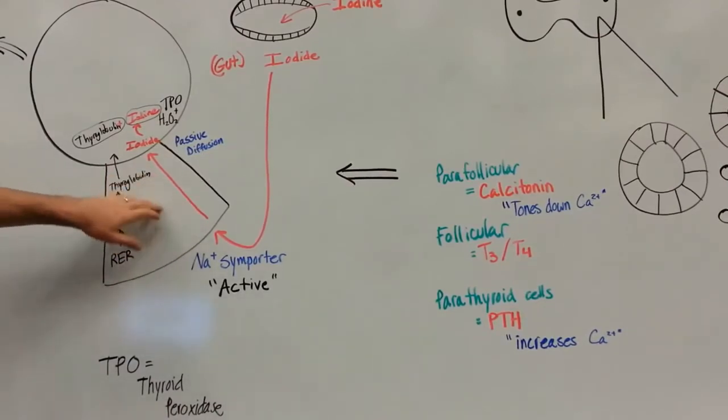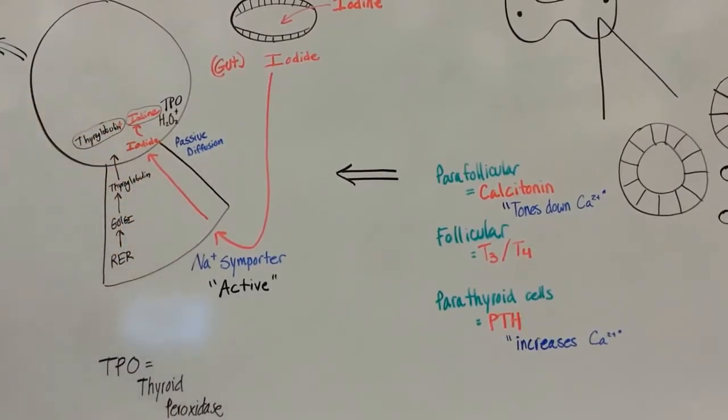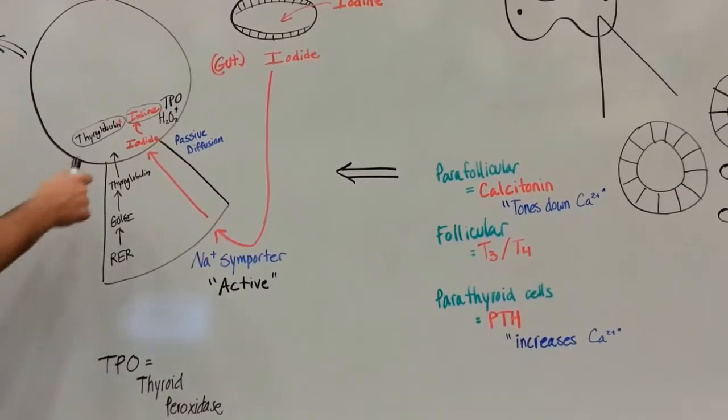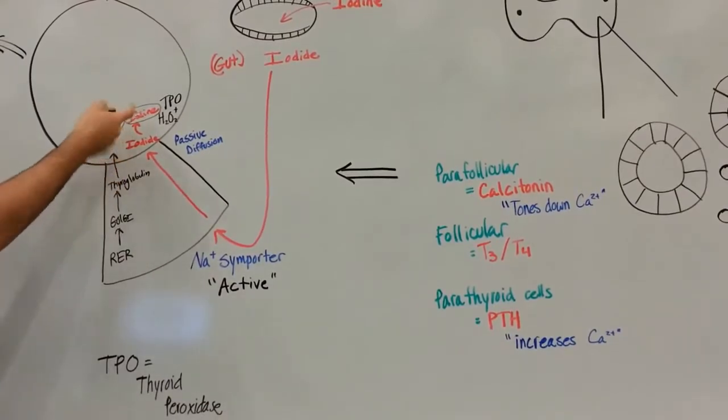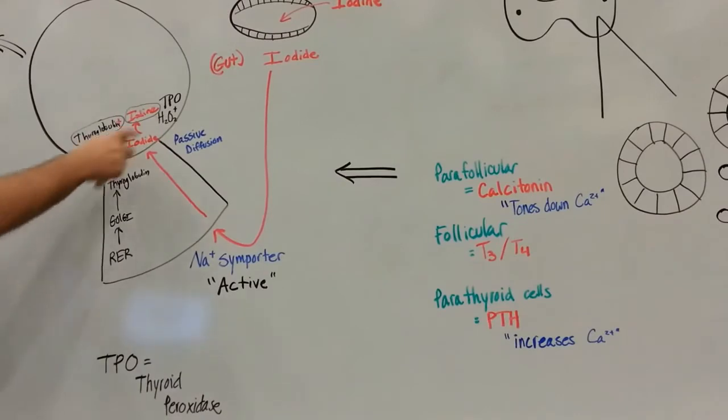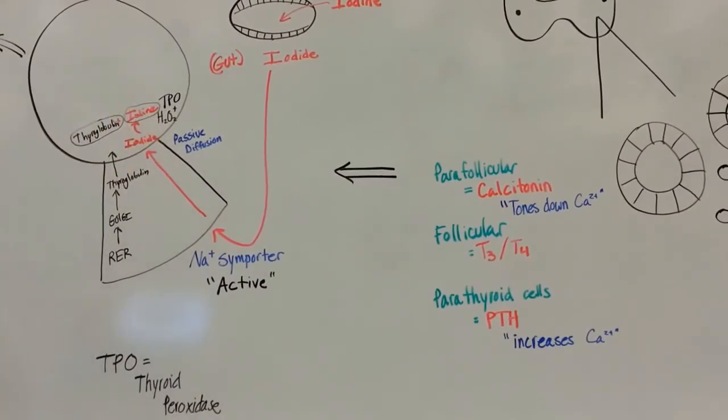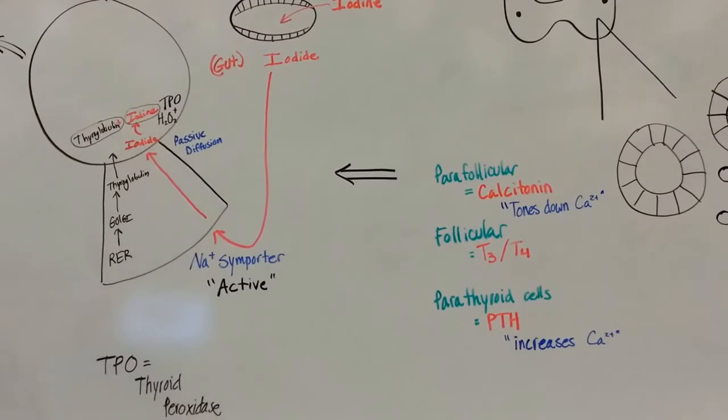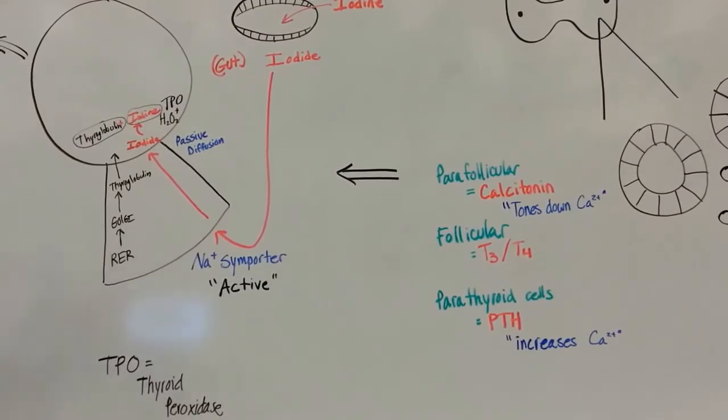That iodide is going to passively diffuse down into the colloid lake, down its gradient, and then that iodide will be converted to iodine via hydrogen peroxide. I've also got TPO, which is going to be thyroid peroxidase. It's an enzyme we'll get to a little later.